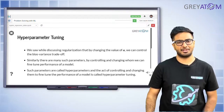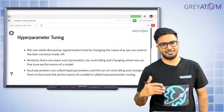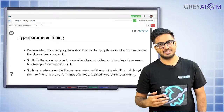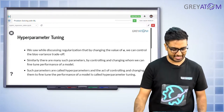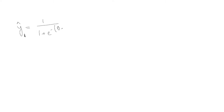Let's understand what hyper parameters are. In logistic regression, the prediction equation gives the probability for class equals 1, given by 1 over 1 plus e to the power of theta naught plus theta 1 x1 plus theta 2 x2 and so on. This is the probability of an example belonging to class 1, and depending on the threshold, we classify it as positive or negative class.